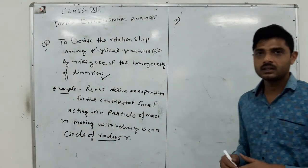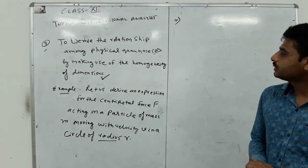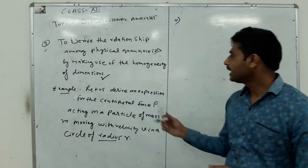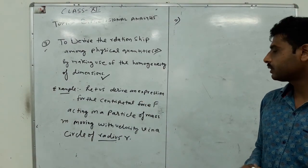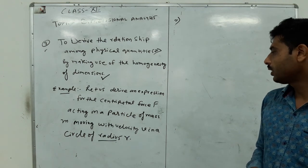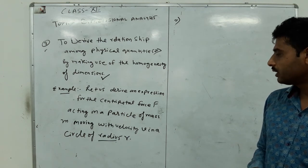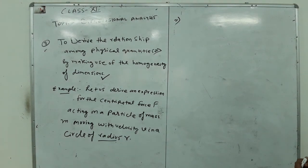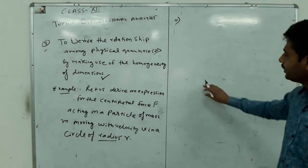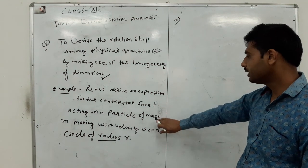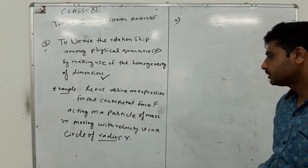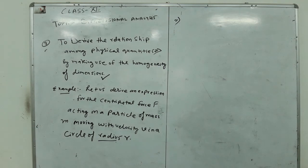We can explain this by using an example. Let us derive an expression for the centripetal force F acting on a particle of mass M moving with velocity V in a circle of radius R. It means the centripetal force depends upon mass, velocity, and radius of circular path.